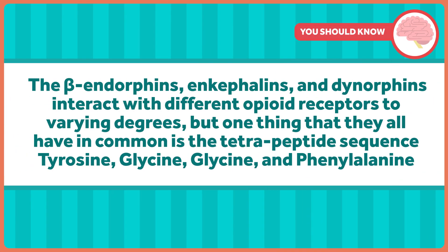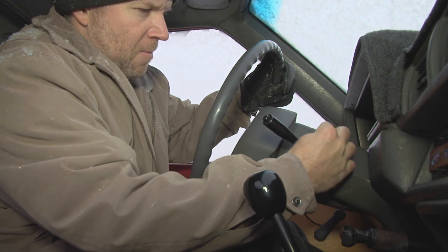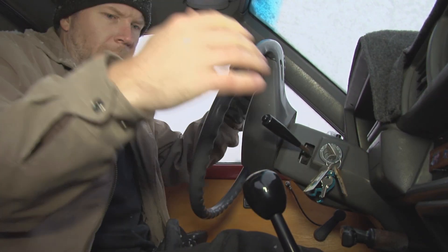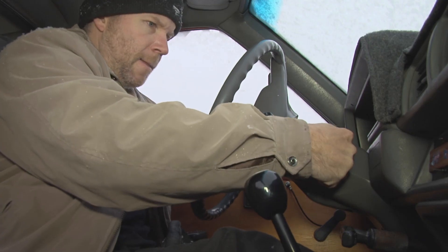Beta-endorphins, enkephalins, and dynorphins interact with different opioid receptors to varying degrees, but one thing they all have in common is the tetrapeptide sequence tyrosine, glycine, glycine, and phenylalanine — or TYR-GLY-GLY-PHE. This sequence is critical because it's needed for the endogenous opioid to interact chemically with the opioid receptor on a neuron. Think of the opioid receptor as a car's ignition and the tetrapeptide sequence as the key — if the key fits just right, the receptor is activated and causes changes in the neuron that decrease the pain signal. Opioid drugs and medications take advantage of this structure-activity relationship, binding to opioid receptors much like endogenous opioids do, but with much more powerful consequences.